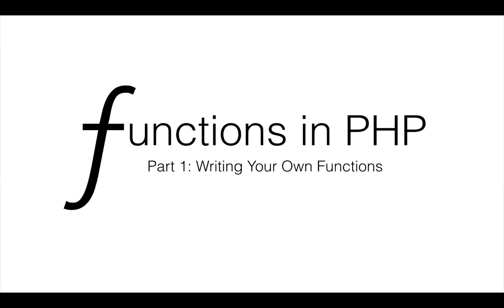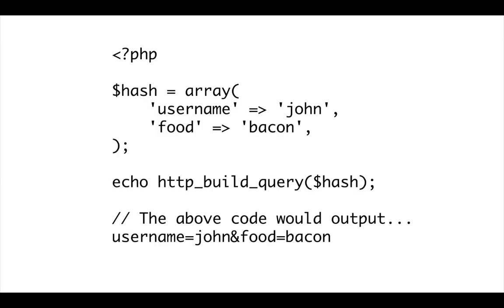If you've worked in any kind of programming language, you've probably seen built-in functions. Built-in functionality to a language is a big reason for wanting to use it. This is a built-in function to PHP that builds an HTTP query string. You'll usually see this piece on a URL after a question mark. HTTP build query is built into the language, yet it's not surprising to find a developer trying to reimplement this function in user land. You should definitely use the functions that are built into the language.